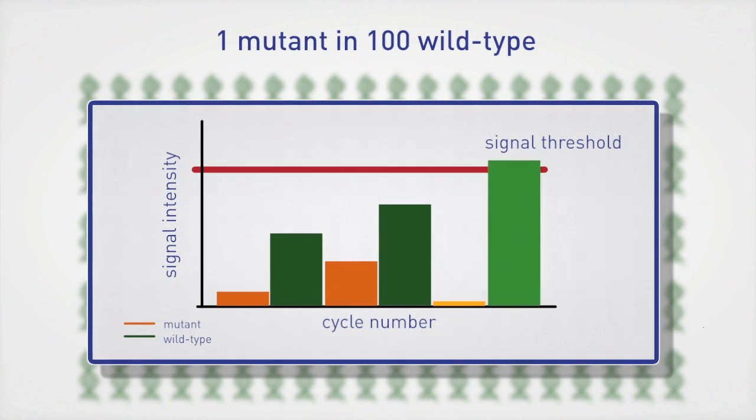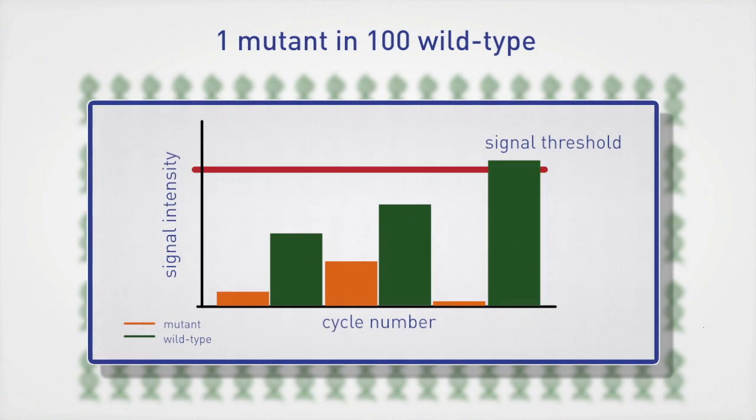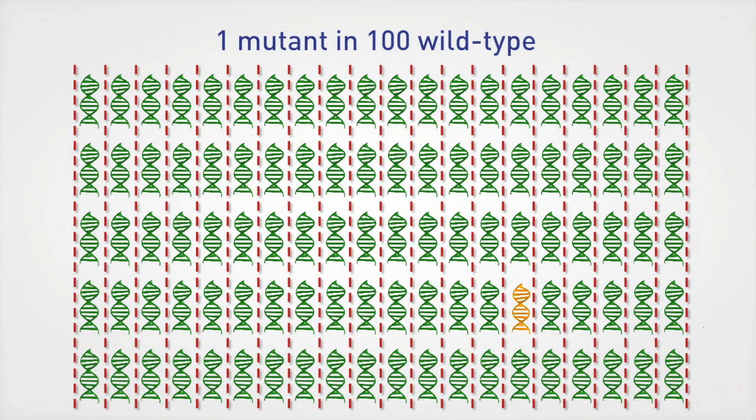the single mutant is lost in a sea of wild-type copies. But if we partition the sample, competing wild-type sequences in any reaction containing a mutant are reduced, effectively decreasing background noise.